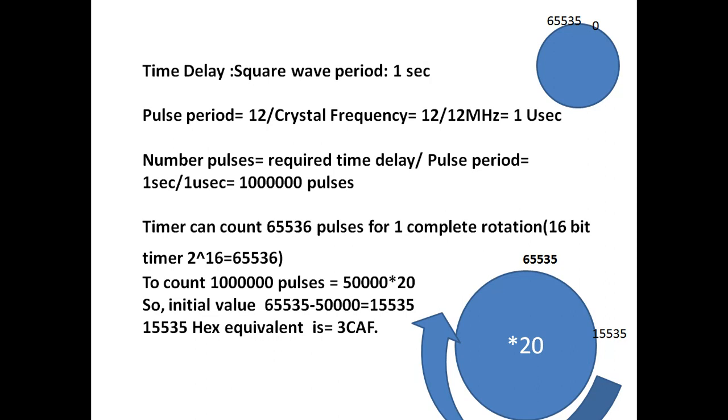By timer for 1 complete rotation, you will get only 1 60 seconds from regular clock. Whereas the same concept you are using from timers. By counting 65,536 pulses, you will get 65,536 microseconds time if you are working with 12 megahertz.